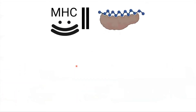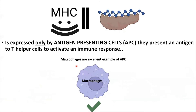MHC class 2, on the other hand, is a complex of proteins expressed only by antigen-presenting cells. The function of these proteins is to present antigens to T-helper cells to activate an immune response, which provides humoral antibody and cell-mediated immunity, as mentioned in the previous video about antigen presentation.